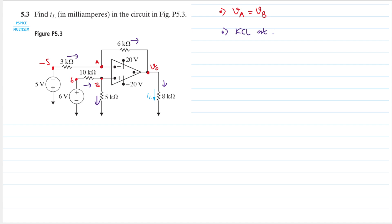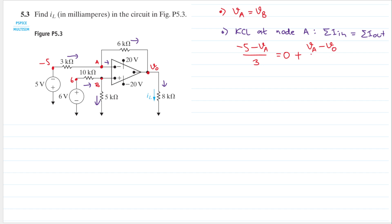Now let's do KCL at node A. KCL states that the sum of the currents going in equals the sum of the currents going out. The only current going in is: (minus 5 minus vA) divided by 3. The current going into the op-amp is 0, so we add 0. That equals the only current going out, which is (vA minus v0) divided by 6.